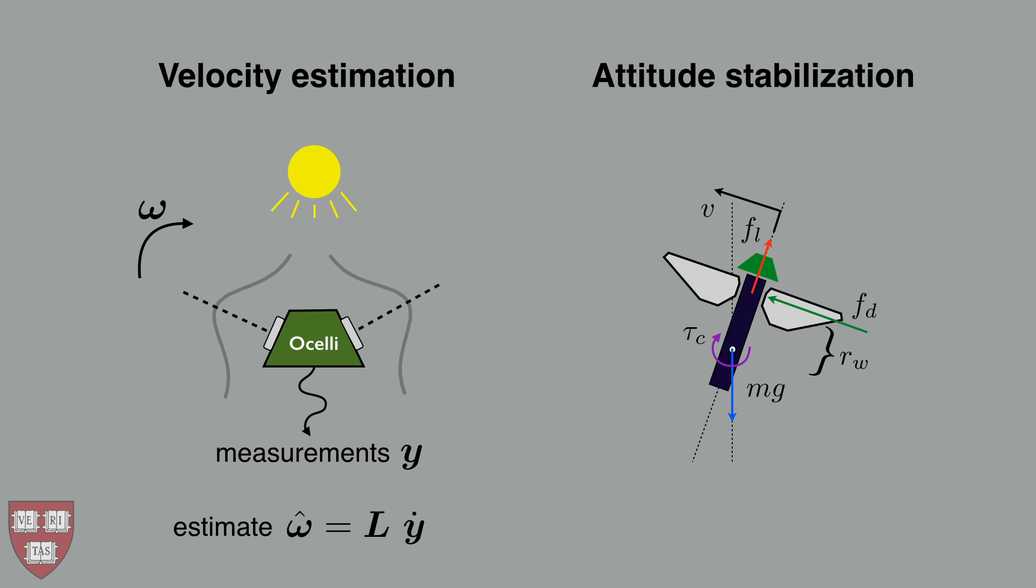We derive a model of the aeromechanics of the robotic insect that shows how it can be stabilized using a damping action that is proportional to its angular velocity.